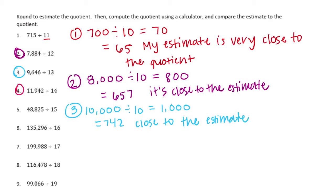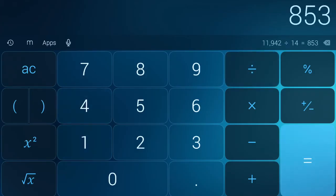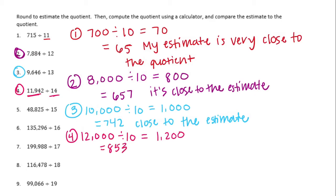Number 4: 11,942 divided by 14. I'm trying to think of things I can round both of these to that I can easily divide. I'm gonna make 11,942 into 12,000, and I can easily divide 12,000 by 10 — rounding 14 to 10 — giving an estimate of 1,200. The actual calculation: 11,942 divided by 14 gives 853. And 853 is kinda close to 1,200, so I'm gonna say that's close to the estimate.